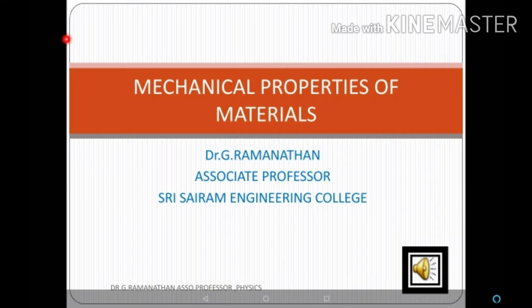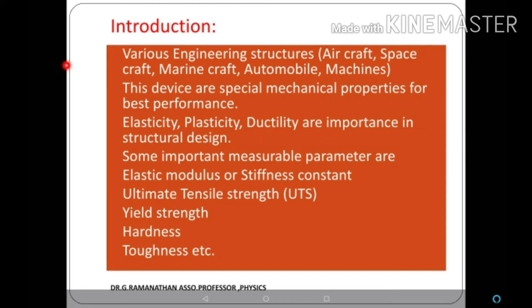Hello students, today we discuss Unit 3: Mechanical Properties of Materials. This chapter is divided into four parts. The first part is an introduction to mechanical properties of materials. The second is strengthening of materials and creep resistance. The third is fracture and fatigue properties. The fourth is hardness. Today we discuss the first part: introduction to mechanical properties of materials.